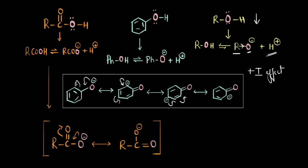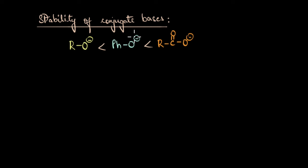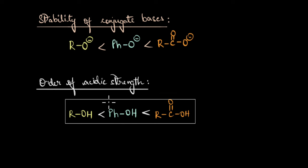Based on this, we can summarize the following. The stability of conjugate bases: alkoxide ions are the least stable, followed by phenoxide ion, and carboxylate ions are the most stable. The more stable the conjugate base, the greater the incentive for the compound to undergo dissociation and release H⁺ ions. Therefore, the order of acidic strength is: alcohols < phenols < carboxylic acids.